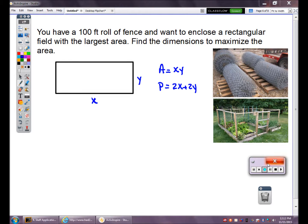First, a few definitions. X by Y will be my rectangle. Area is base times height, X times Y. Perimeter, there's two X's, there's two Y's. Add them up. I'm trying to maximize the area, maximize X times Y. The roll of fence is 100 feet long, so my perimeter is 100. 2X plus 2Y equals 100.